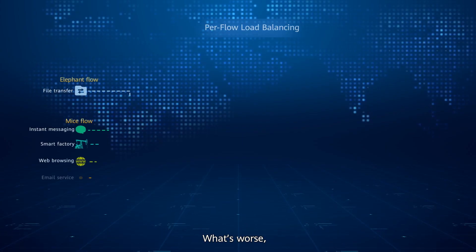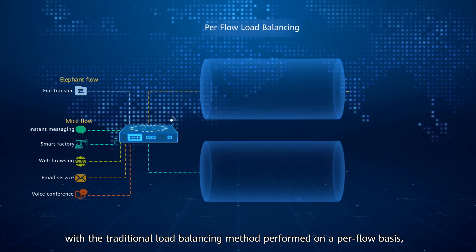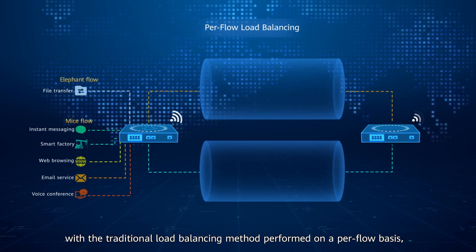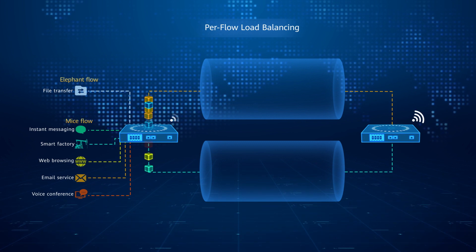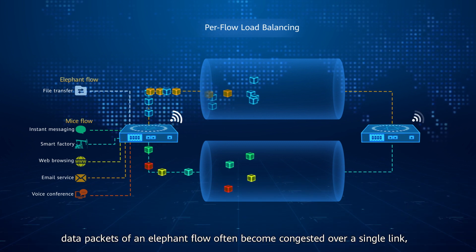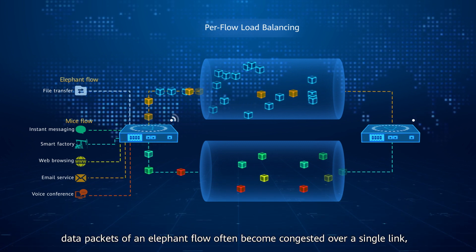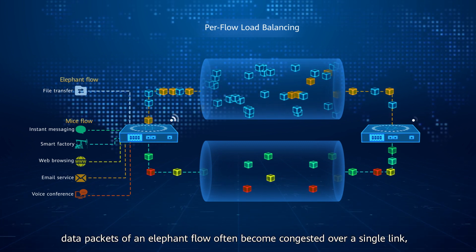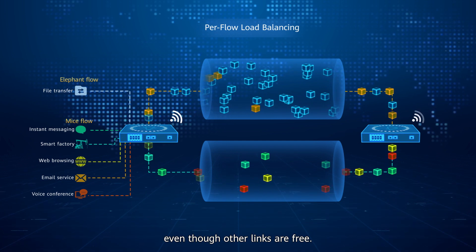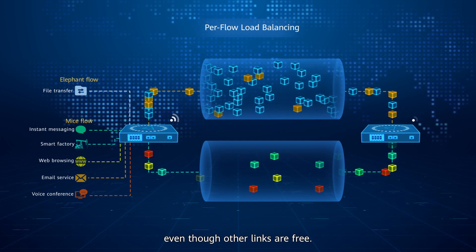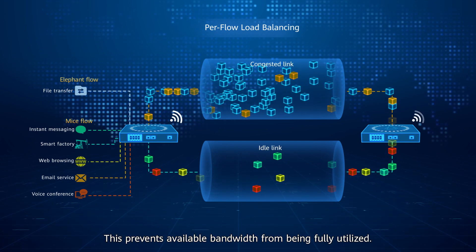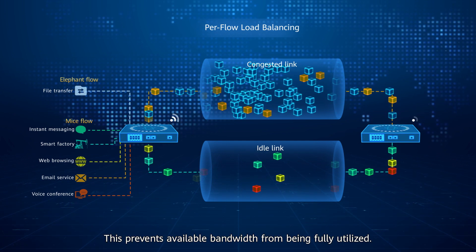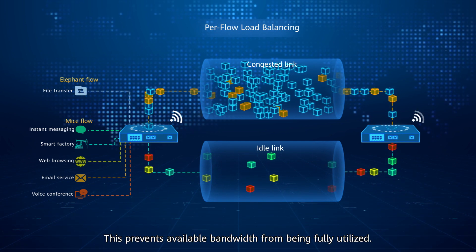What's worse, with a traditional load balancing method performed on a per-flow basis, data packets of an elephant flow often become congested over a single link, even though other links are free. This prevents available bandwidth from being fully utilized.